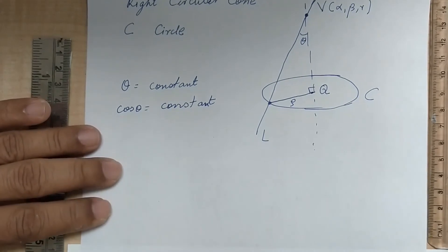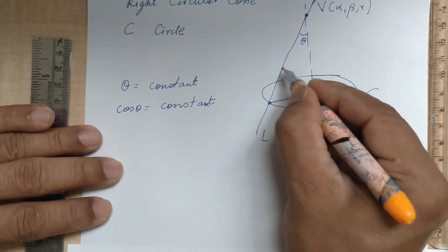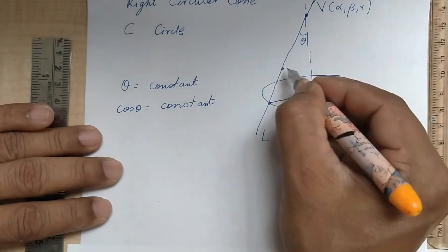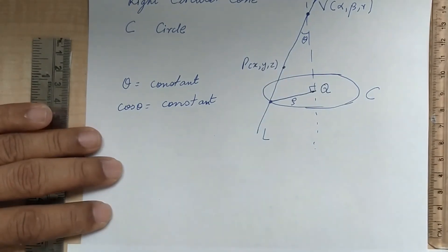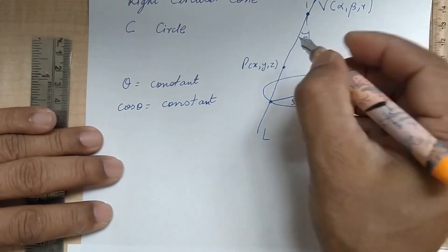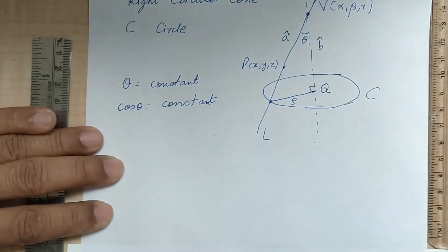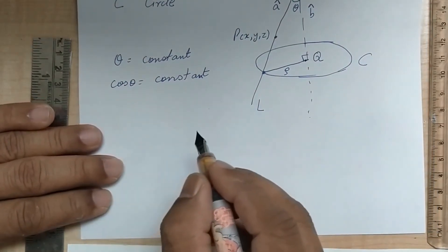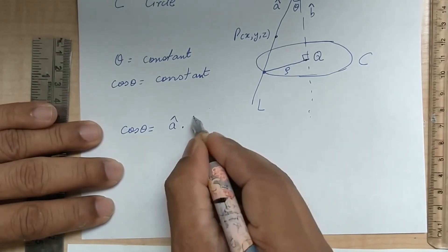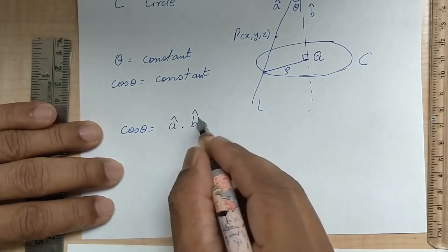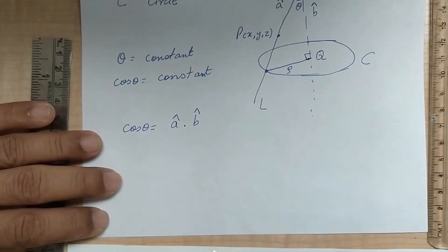Cos theta is a constant. I can write cos theta in terms of a generic point (x, y, z) on the cone. If I take a unit vector a-hat in the direction from V to P, and a unit vector b-hat along the axis, then cos theta equals a-hat dot b-hat, since both are unit vectors and their magnitudes are one.